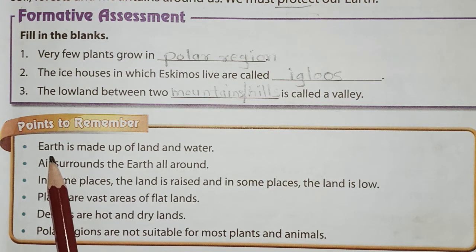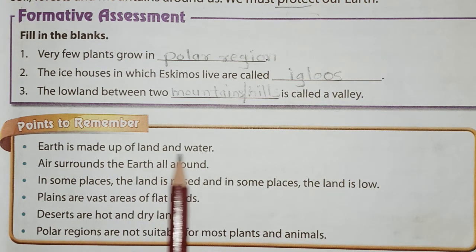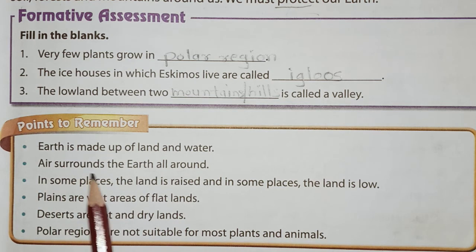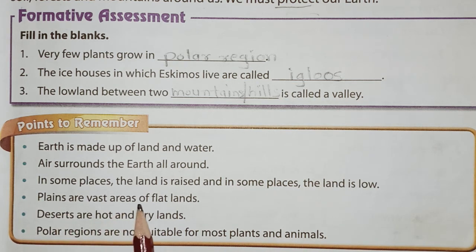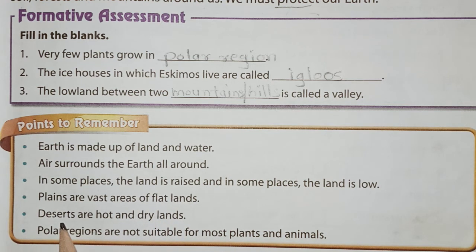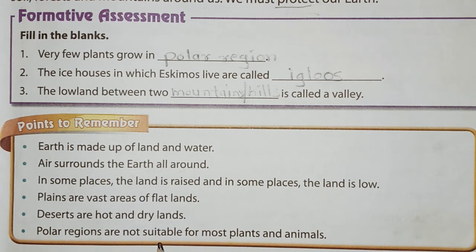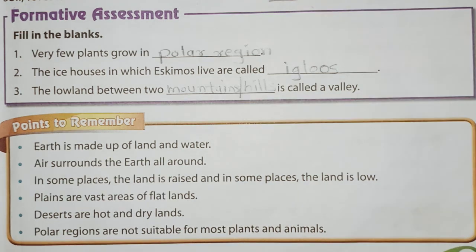Let's revise the lesson. Earth is made up of land and water. Air surrounds the Earth all around. In some places the land is raised and in some places the land is low. Plains are vast areas of flat lands. Deserts are hot and dry lands. Polar regions are not suitable for most plants and animals. Thank you students — watch this video again and again and learn the lesson. We will meet for the exercise in our next video. Thank you.